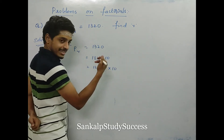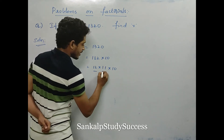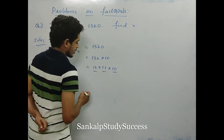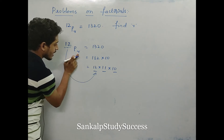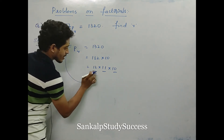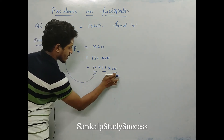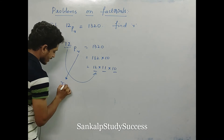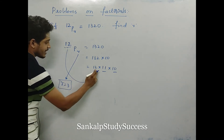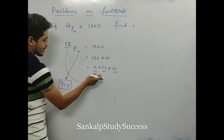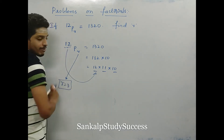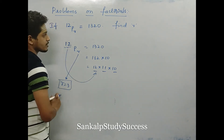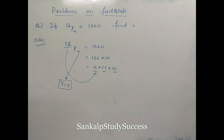The consecutive numbers are in decreasing order: 12, 11, and 10. The product starts from 12. Counting the numbers: 1, 2, 3 — that means the value of r is 3. There are 3 numbers in the multiplication starting from 12. So r value equals 3. Such a beautiful question. Please note this.